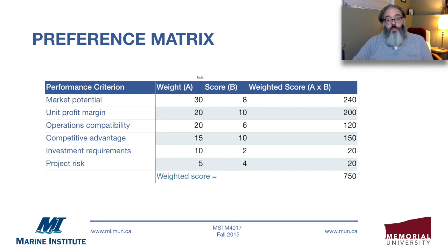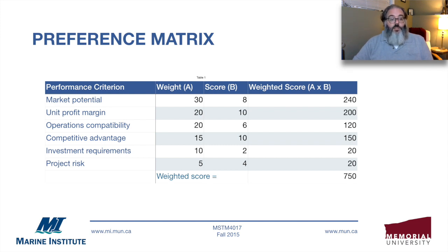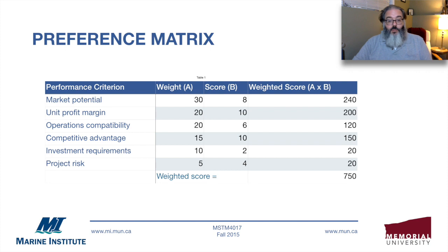I've used a preference matrix to evaluate tender submissions for a public tender. Our scores were 1 to 100, and we had so many criteria — we ended up with 90-something criteria that had to be scored for each tender. We did not use a sum of 100 for weights, but the weights still showed that market potential is three times the investment requirements, and six times as important as project risk. It's really a way to get comparisons, ensuring criteria that are equally valued — like unit profit margin and operations compatibility — have the same weight.